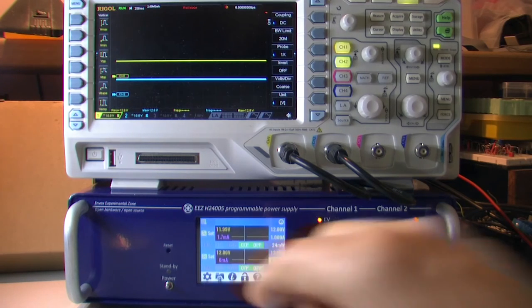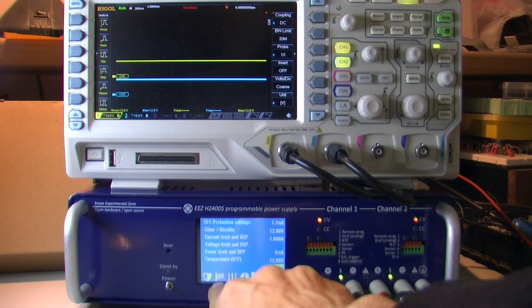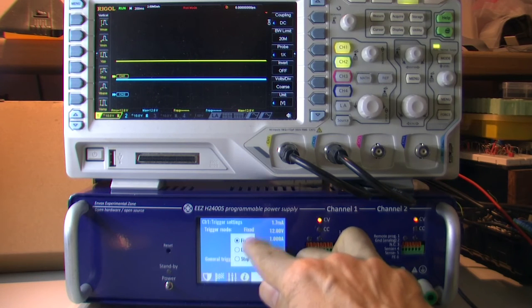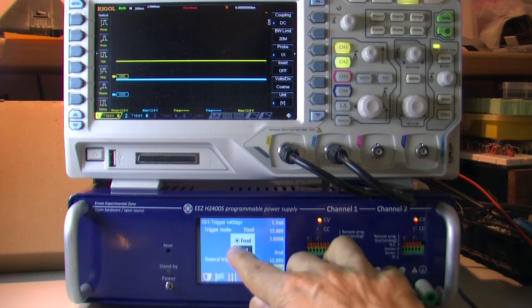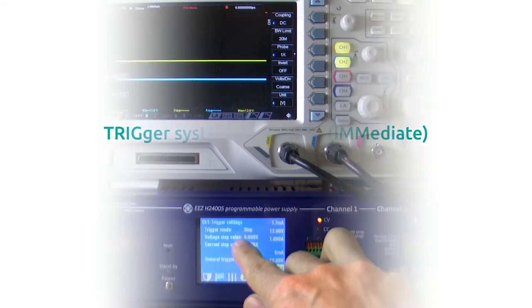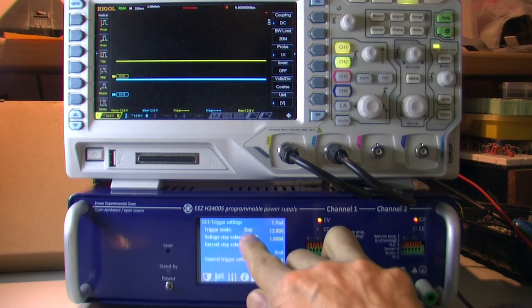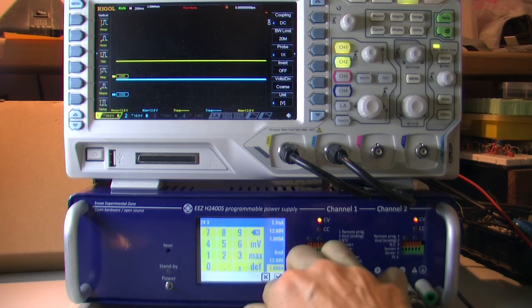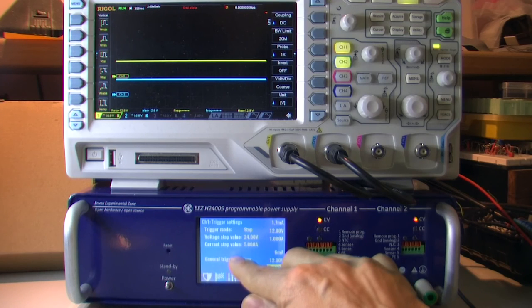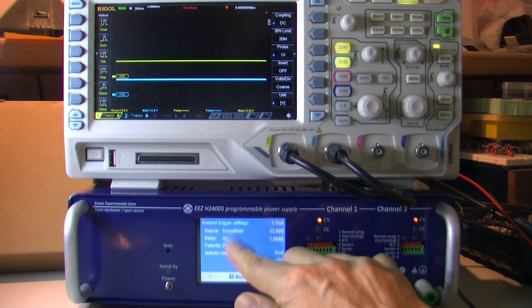On the channel side we added a new tab, triggering settings, and we can see that each channel can be set in one of three trigger modes: Fixed, that means no trigger is used; List; or Step. That means when trigger is initiated we can define what will be the new voltage and current. From this page we can also go to that general or system trigger settings which was shown before.